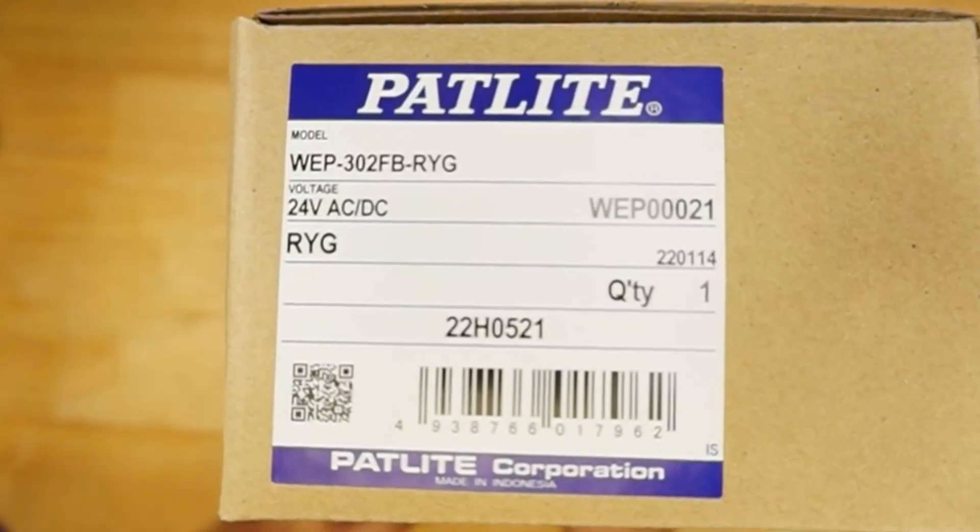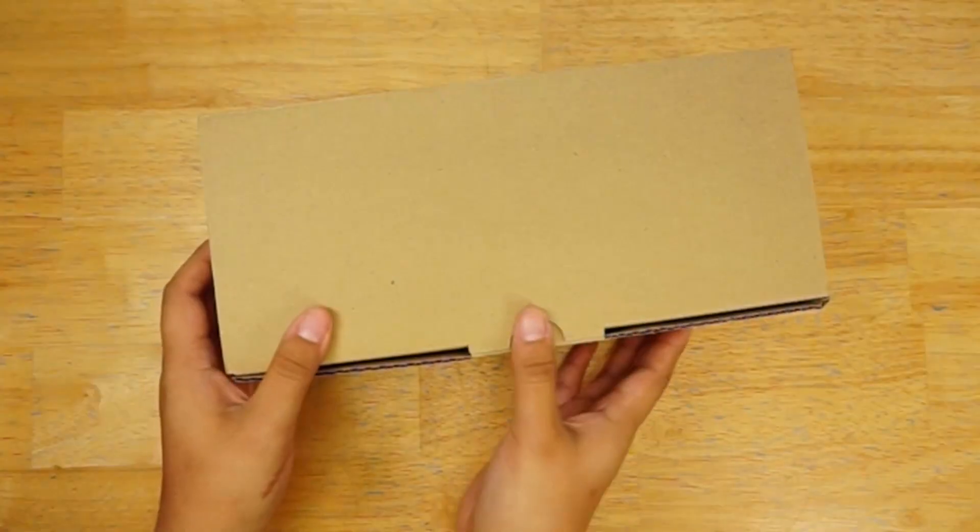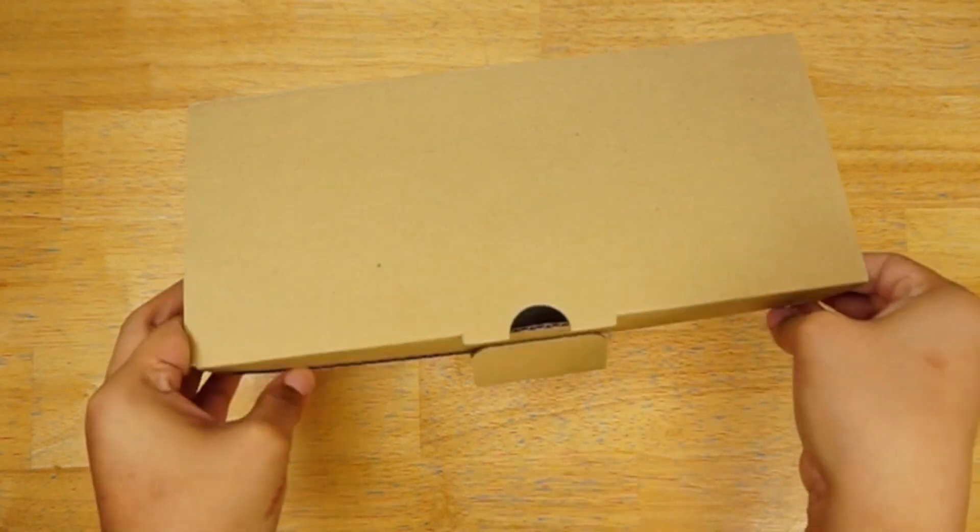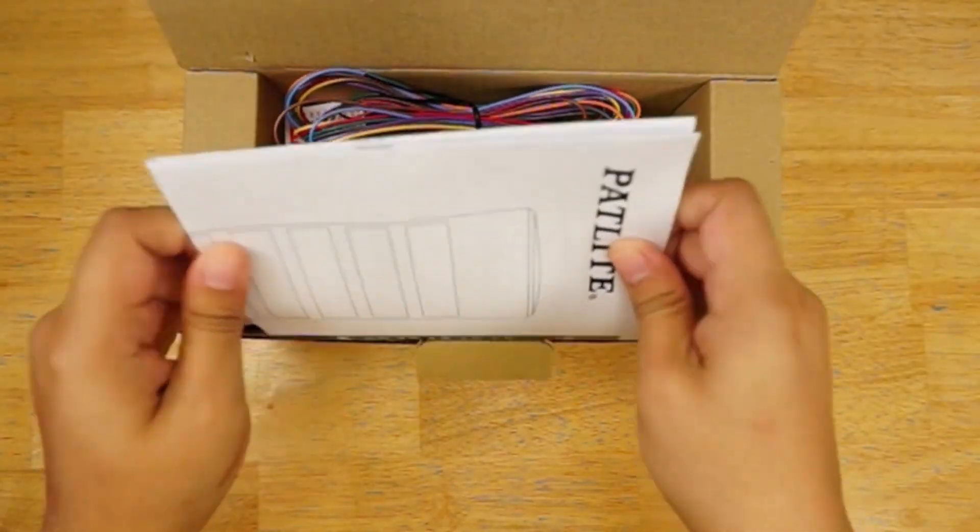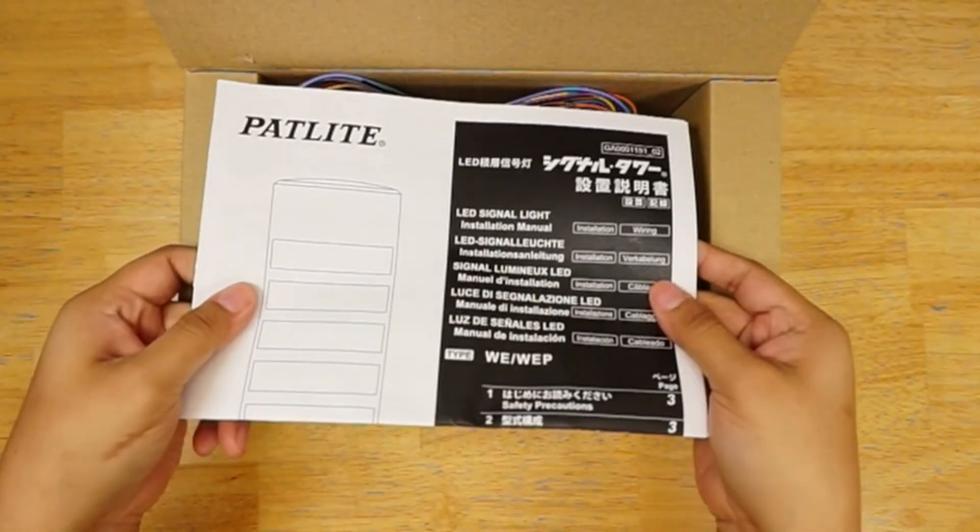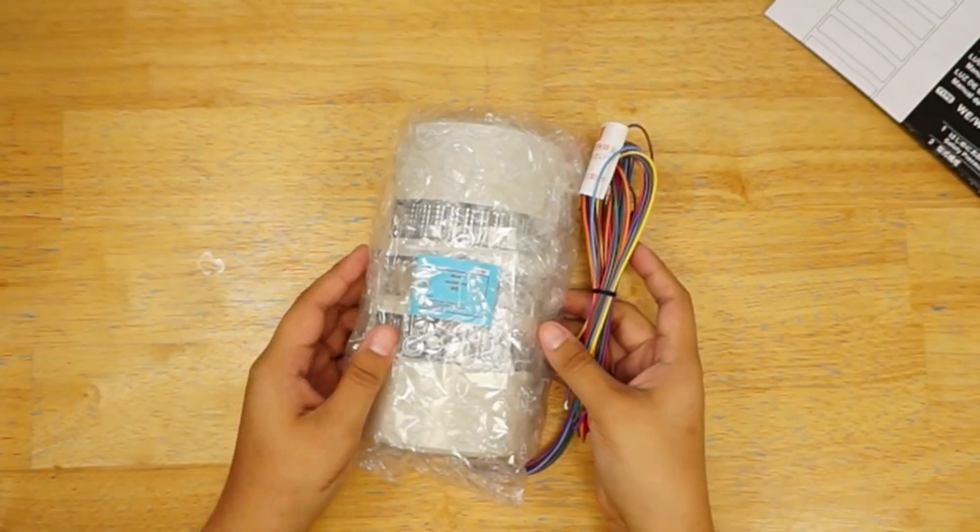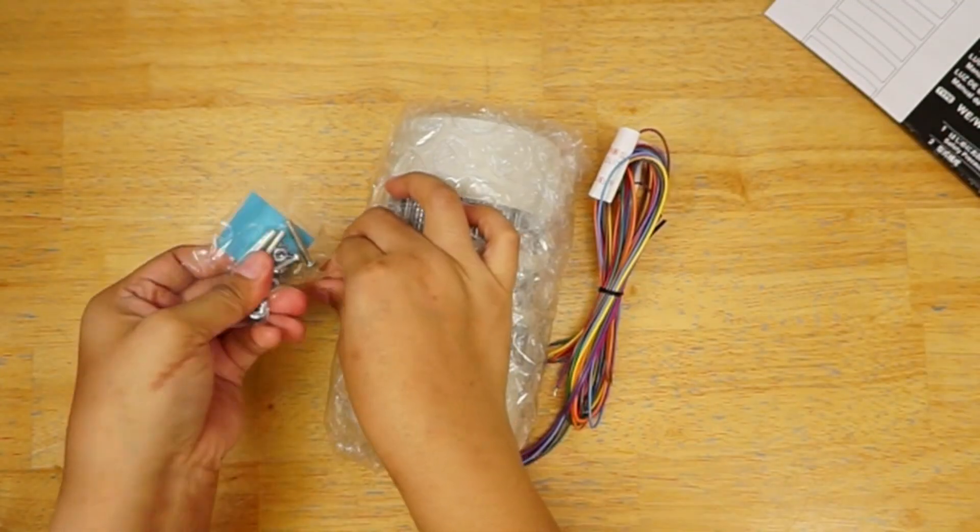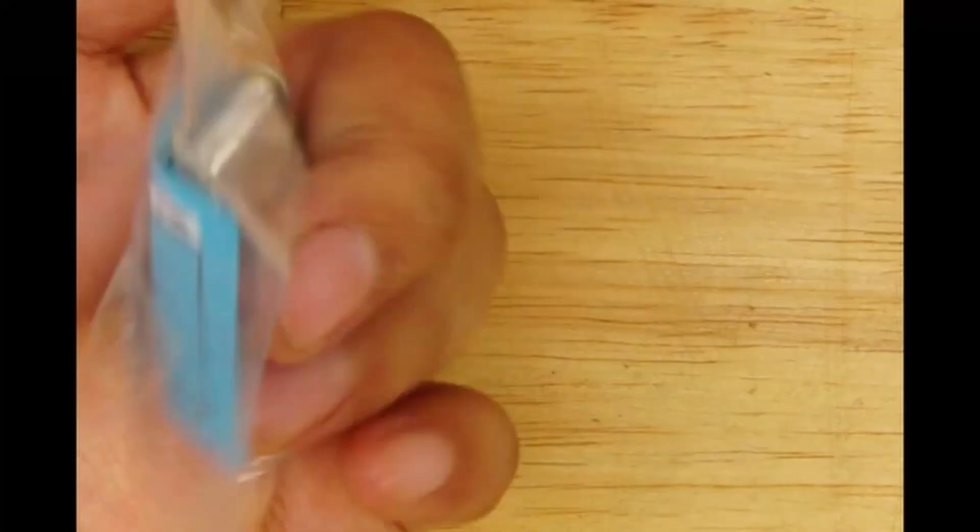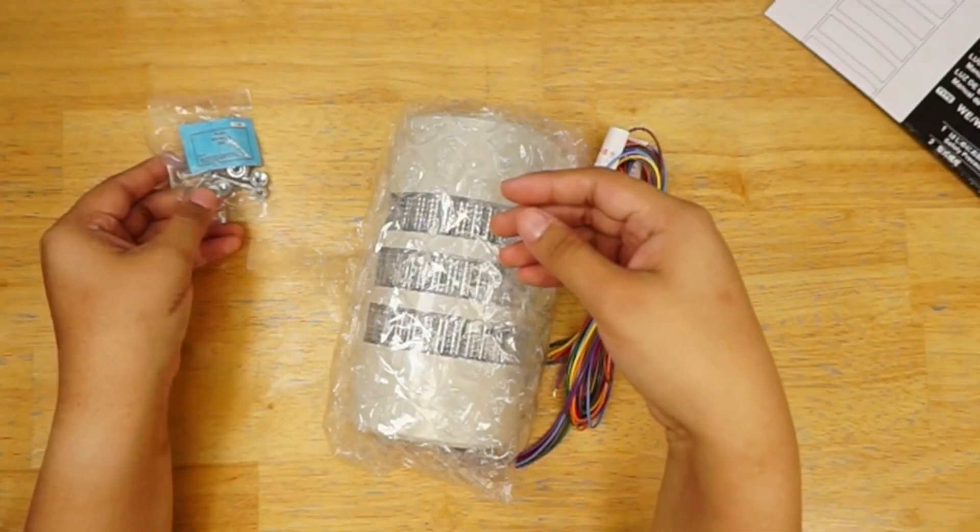Today we are unboxing a WEP-302FB-RYG. The manual insert is wrapped around the WEP and M4 mounting hardware is taped to the outer wrapping. Removing the tape, open the WEP.